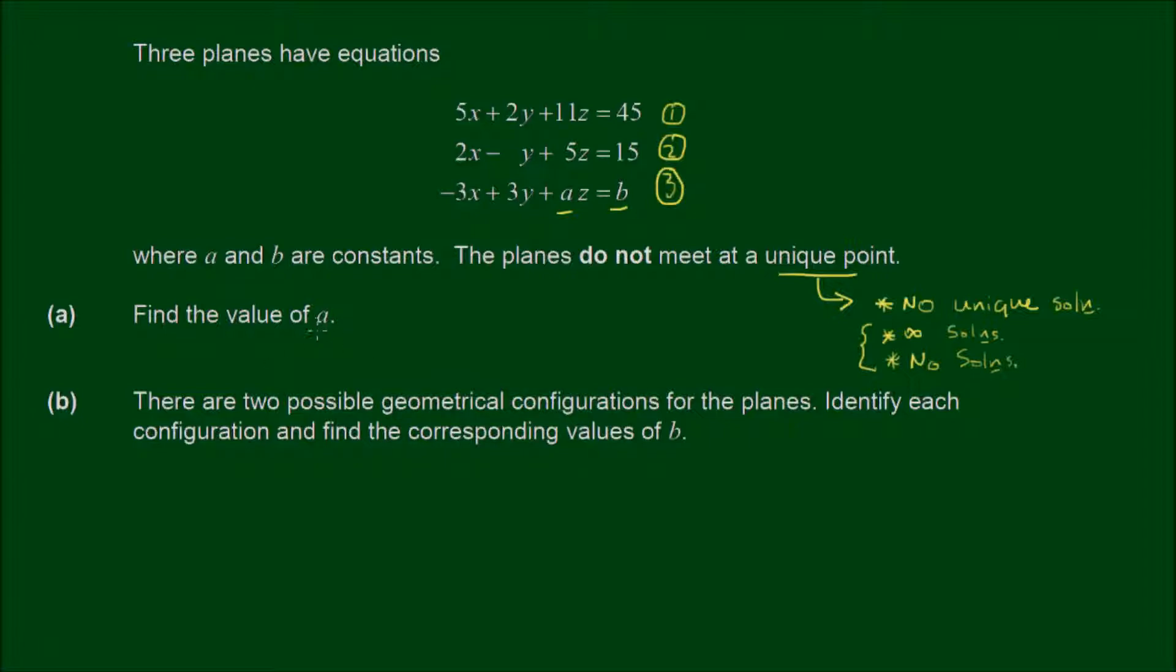So for part A, we want to find the value of A. There are several ways you can do this problem. The way that I'm going to do it makes most sense to me, is to treat these as a system of equations and use an augmented matrix to find a solution. So I'll put all the coefficients and the numbers in an augmented matrix. The first row is going to be 5, 2, 11, and 45. The second row will be 2, negative 1, 5, and 15. The third row will be negative 3, 3, A, and B.